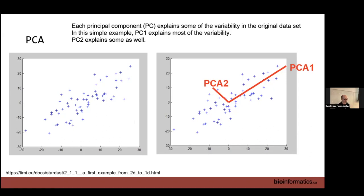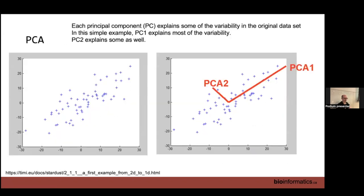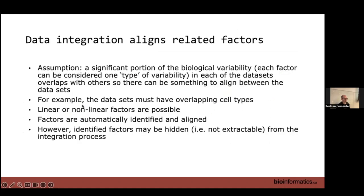Data integration really relies on identifying these factors and aligning them. The assumption is that a significant portion of biological variability can be captured in such factors. Data integration methods try in various ways to identify factors that are similar between datasets and then align them — push them together. All the rest of the data comes along for the ride based on that alignment process.